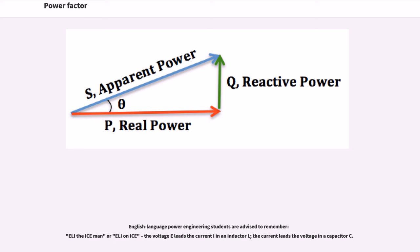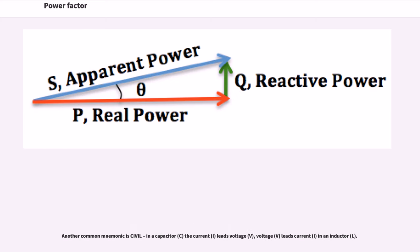English language power engineering students are advised to remember the mnemonic 'ELI the ICE man' or 'ELI on ICE': the voltage E leads the current I in an inductor L; the current leads the voltage in a capacitor C. Another common mnemonic is CIVIL: in a capacitor the current leads voltage; voltage leads current in an inductor.